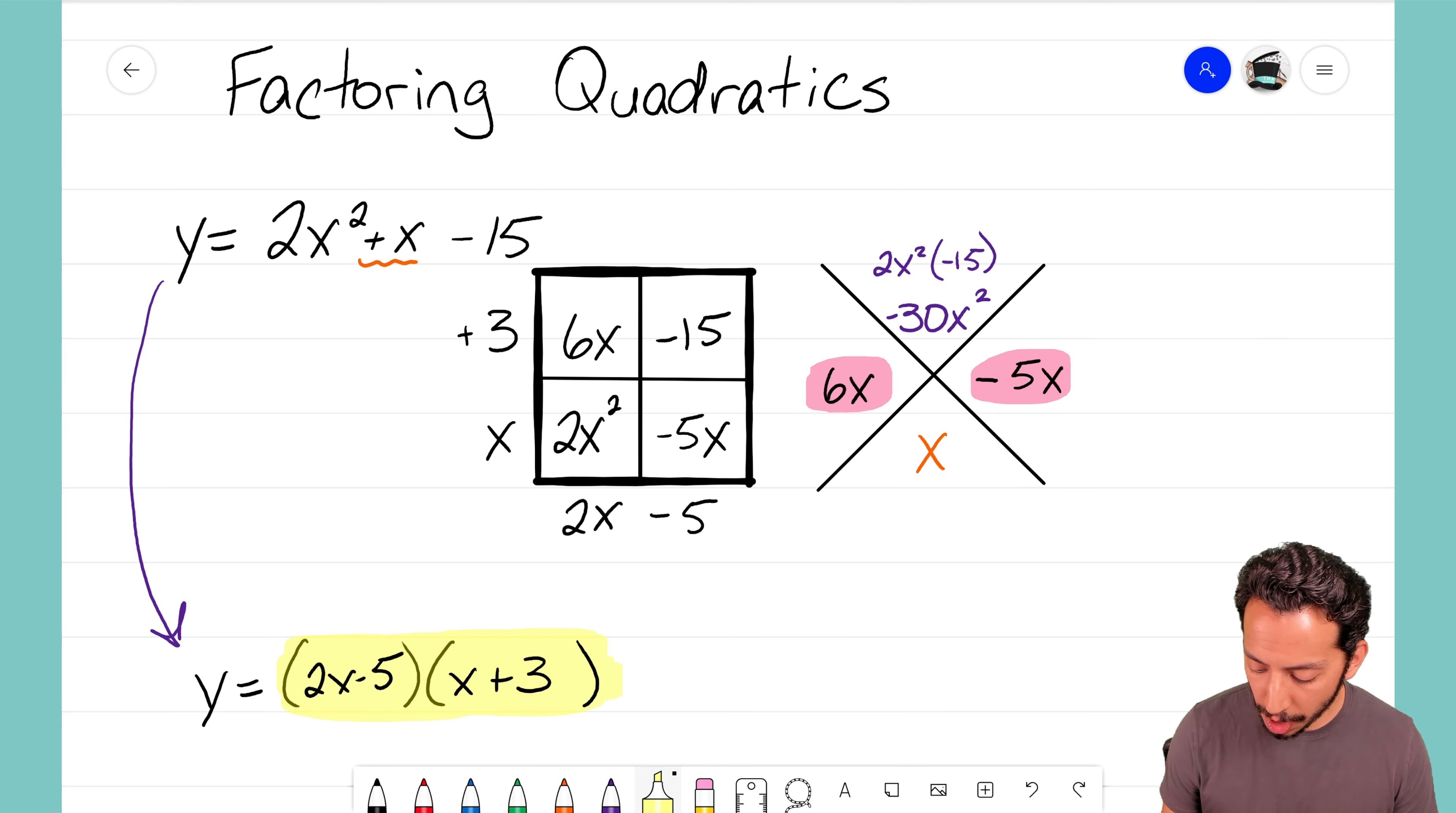Again we started off with our equation written as a sum. We change that sum to a product by factoring using the box and diamond method. It's that math magician and I'll see you on the next video.